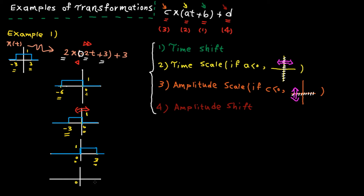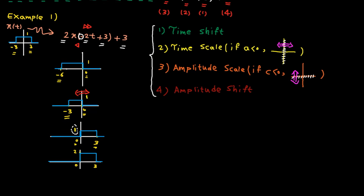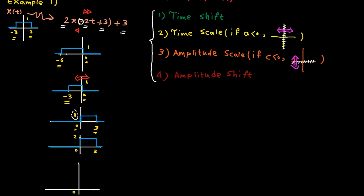Next step is amplitude scaling: we multiply the signal by two. The shape doesn't change in the time direction; all we need to do is multiply each value by two, so one on the y-axis goes to two. Here is our magnified signal. Finally, apply amplitude shifting: the whole signal goes up by three units — zero goes to three, two on the y-axis goes to five. Here is the final signal.